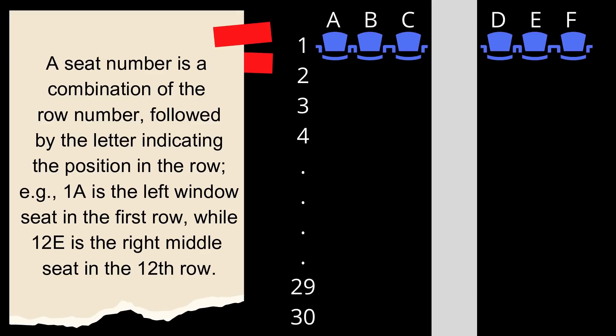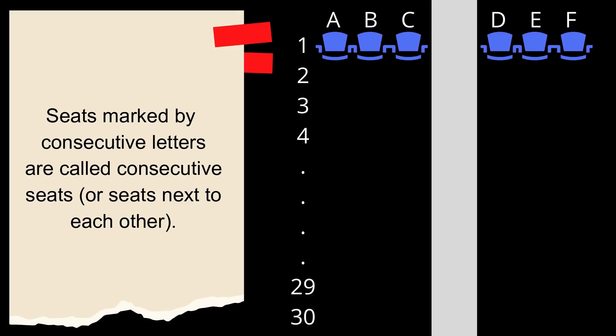This is this long paragraph, all it's telling you, the only thing that's important in this entire paragraph is the statement where it says what are consecutive seats. Seats marked by consecutive letters are called consecutive seats or seats next to each other. Otherwise, everything is similar to how it's in the actual plane as well. Let's read ahead.